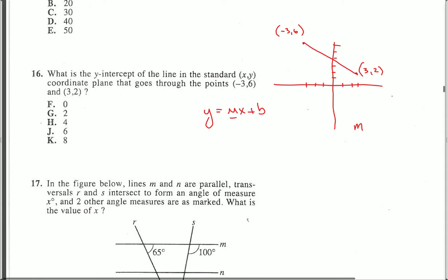The slope formula is rise over run, or delta y over delta x, or y2 minus y1 over x2 minus x1.